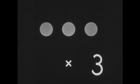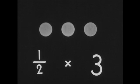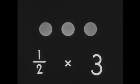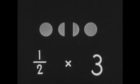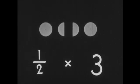Suppose our group is three disks and we multiply it by one half. The number we are multiplying by is a fraction. The denominator of that fraction is two, so we divide our group into two parts. Our numerator is one, so we have only one of those parts in our answer. Our answer is one and a half, or three halves.